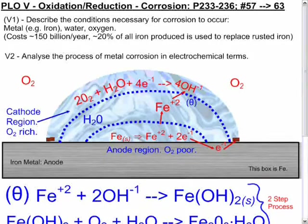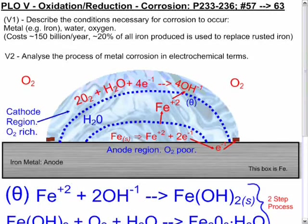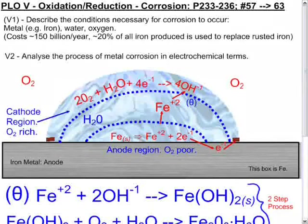These figures are probably a number of years out of date by now, just to give you a feeling for how much it actually matters. This is a review of corrosion in terms of oxidation reduction for Chemistry 12 and an analysis of the process of corrosion in electrochemical terms.